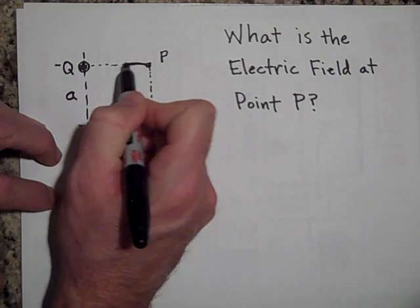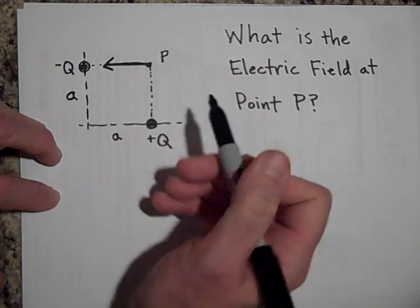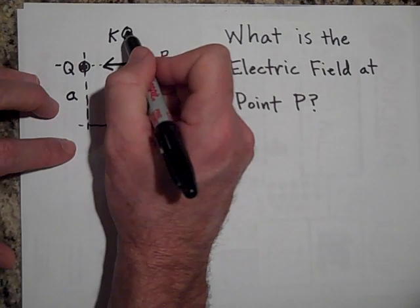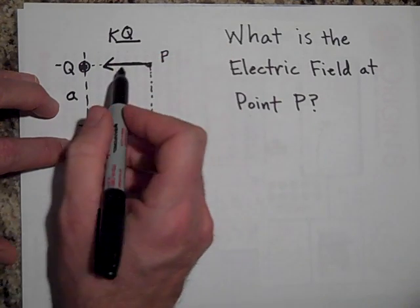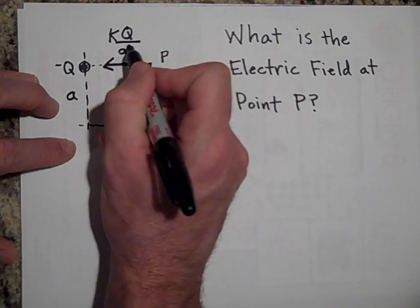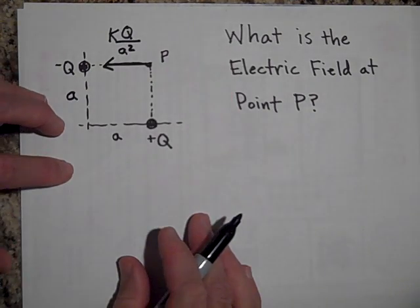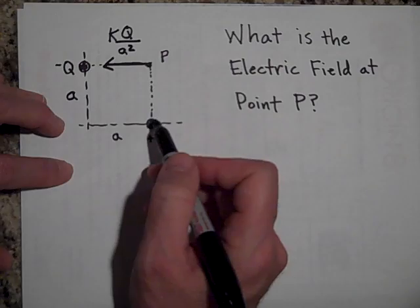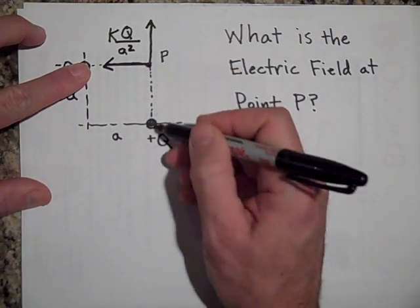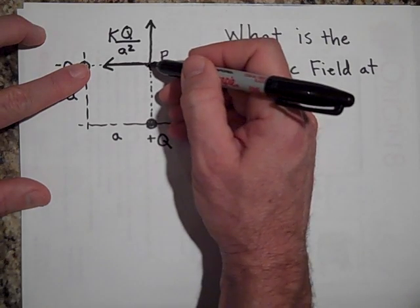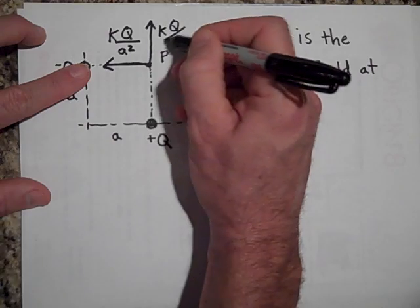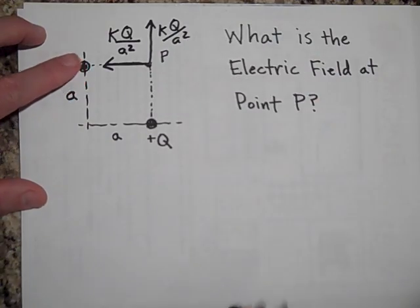If I put a test charge here, it's going to be pulled this way. And that field is K times Q. I'm just using the magnitude. I've already put the negative in by putting the arrow there times A squared. Okay, the field from this guy, forget about this one for a moment, is going to be this way. Because that's a positive charge and it would push a test charge that way. And it would again be KQ over A squared.